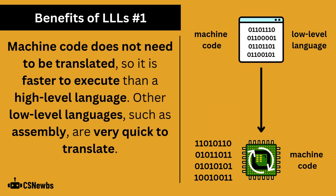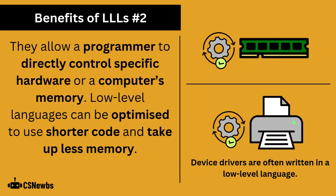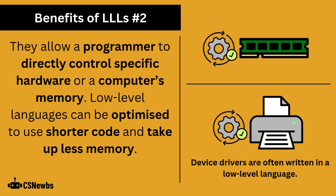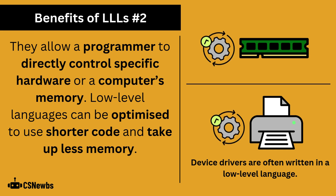Machine code does not need to be translated, so it is faster to execute than a high-level language. Other low-level languages, such as assembly, are very quick to translate. Another advantage is that low-level languages allow a programmer to directly control specific hardware or a computer's memory. They can also be optimized to use shorter code and take up less memory.